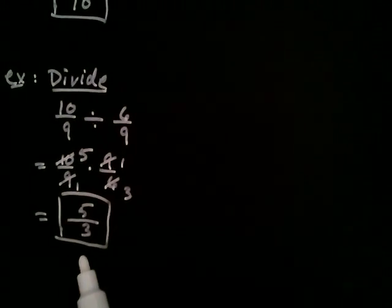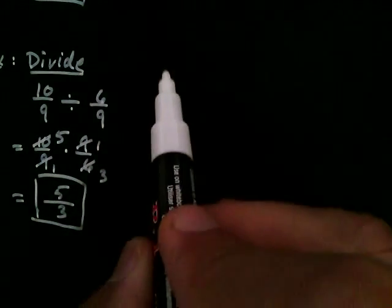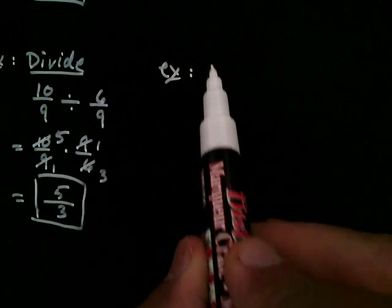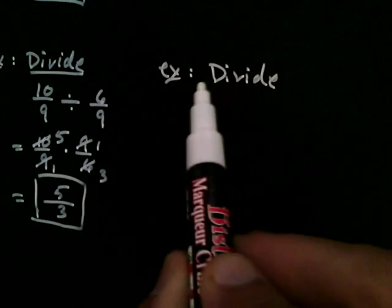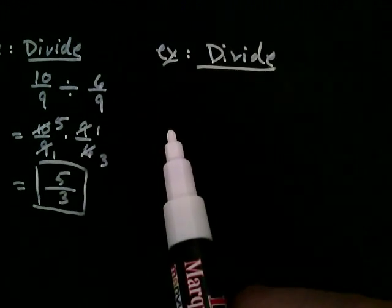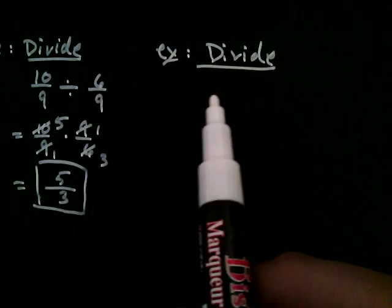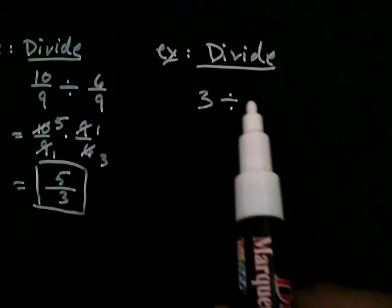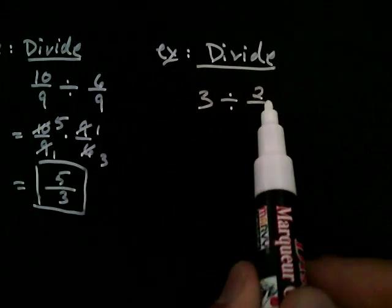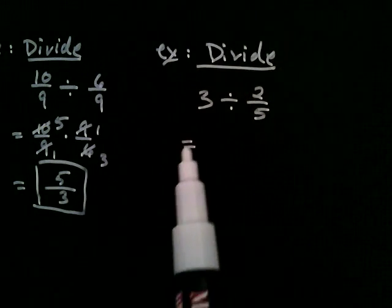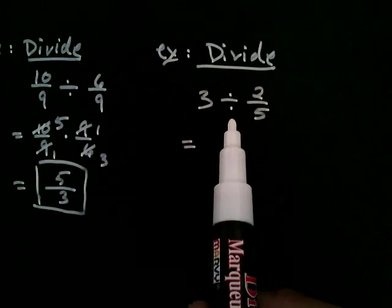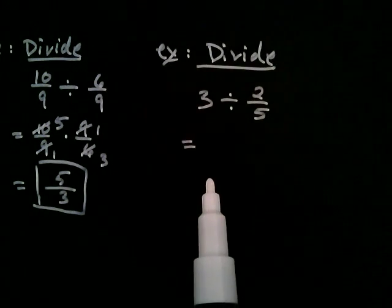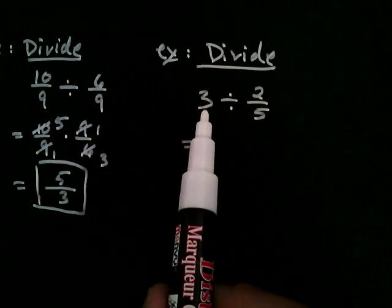Let's try another one. So let's go ahead and divide. How about we divide three divided by two fifths? So the same logic applies. I still want to turn division into multiplication, and take the reciprocal of the second fraction. Now three, we can write as a fraction, right? Three is the same as three over one.